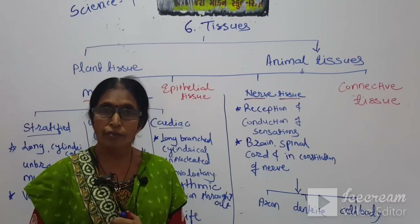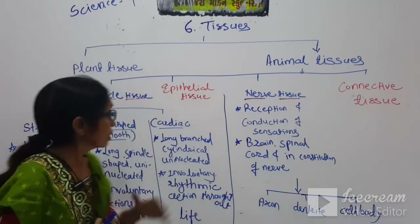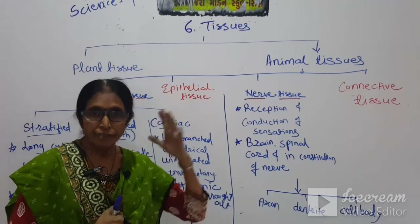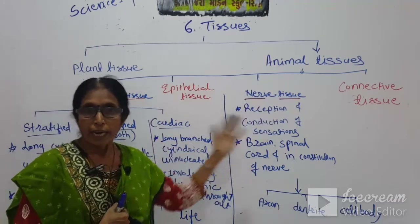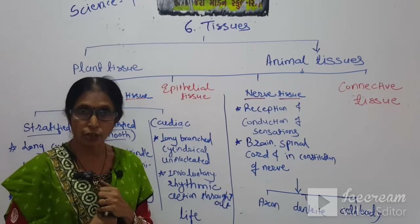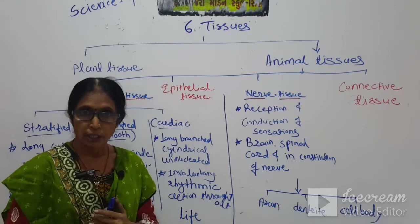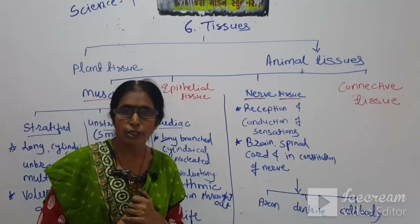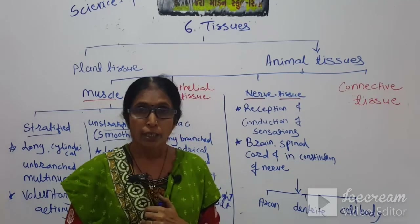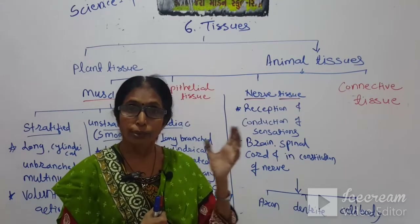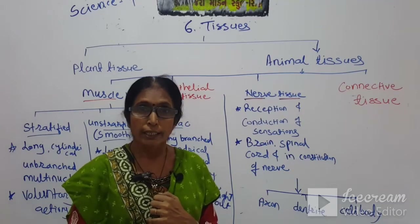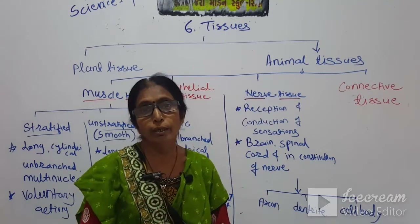Now only two types of animal tissues are left: muscle tissue and nerve tissue, and then we will finish this chapter. Nerve tissue — from the name, we know they are connected with our brain. They are responsible for transport of messages from any organ of the body to the brain and also the spinal cord. Some nerve tissues take the message from the brain to the organ of the body.